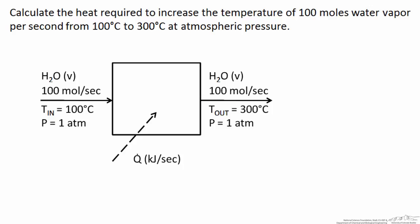In this screencast we are going to take a look at an example of sensible heat and use physical property data to help us perform sensible heat calculations. In this case we want to calculate the heat that is required to increase the temperature of 100 moles of water vapor per second from 100°C to 300°C at atmospheric pressure.